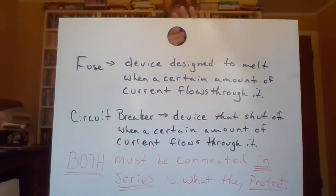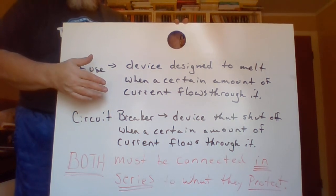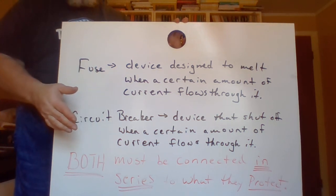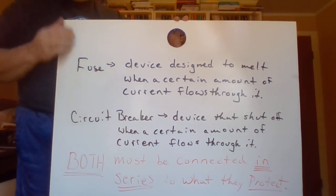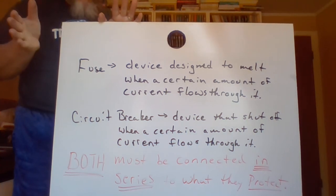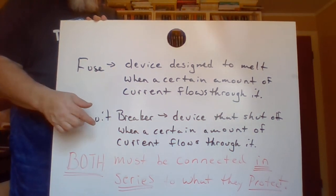First off, the safety devices. The circuit breaker and the fuse are two safety devices that we use to protect circuits from too much current. Fuses are devices designed to melt when a certain amount of current flows through them. They are quite physically fragile — a certain current flows through that heats up the element of the fuse enough that it causes that part to melt and become disconnected, so no more current can flow through.